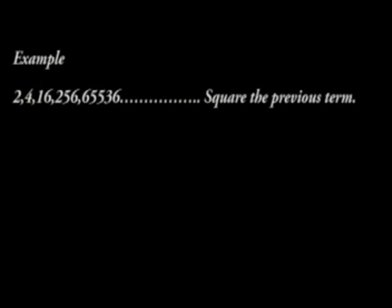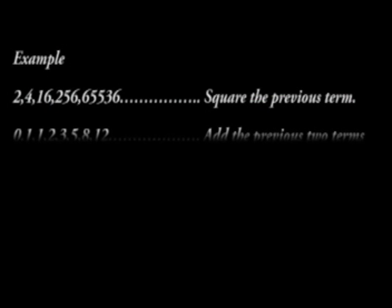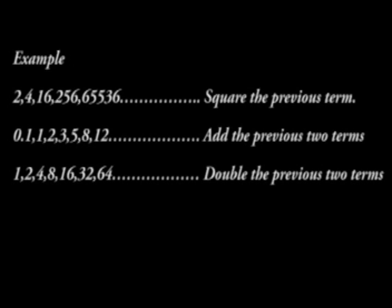For example, 2, 4, 16, 256 means you square the previous term. 0, 1, 1, 2, 3, 5, 8, 11, we add previous two terms and so on.